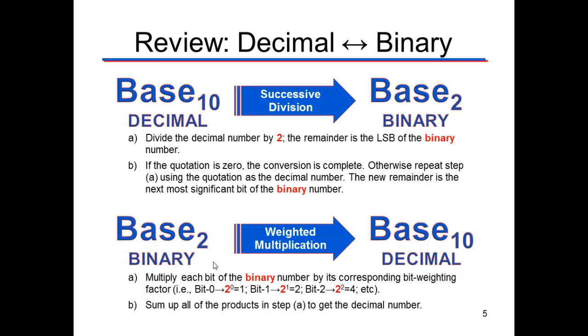Let's just go back. To move from base 10 decimal to base 2 binary, we divided by 2 - successive division. To go from base 2 to decimal, we did weighted multiplication: 2 to the 0, 2 to the 1, 2 squared, that sort of thing.